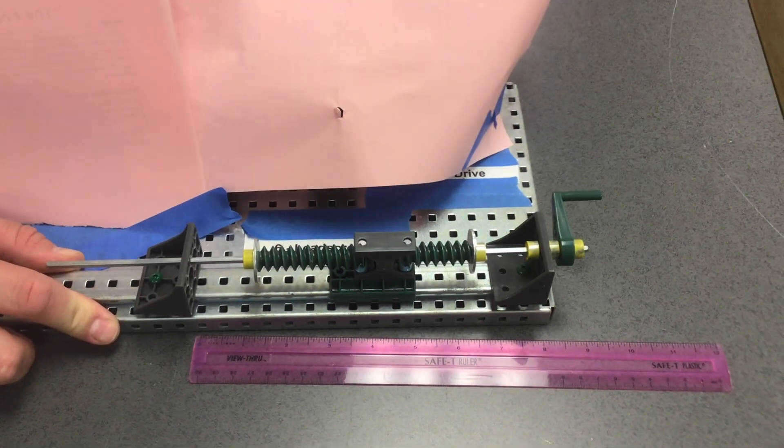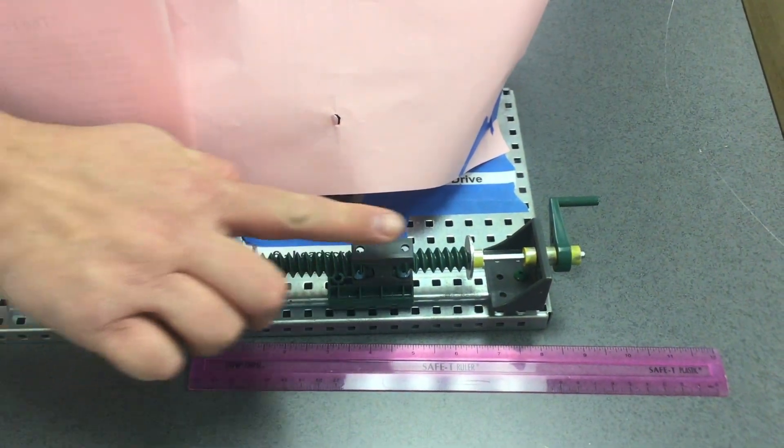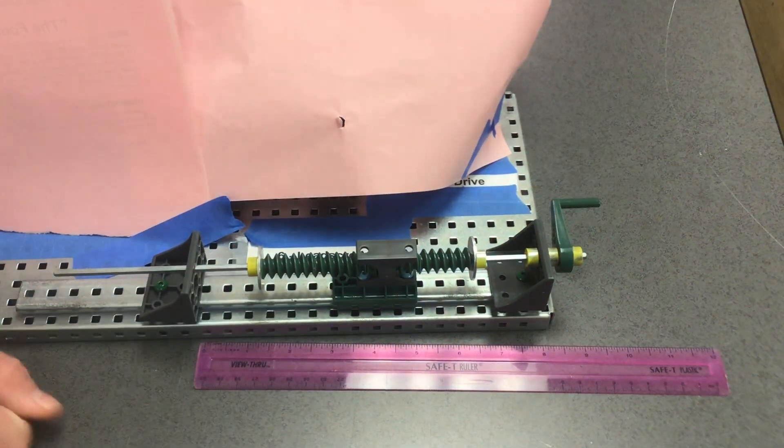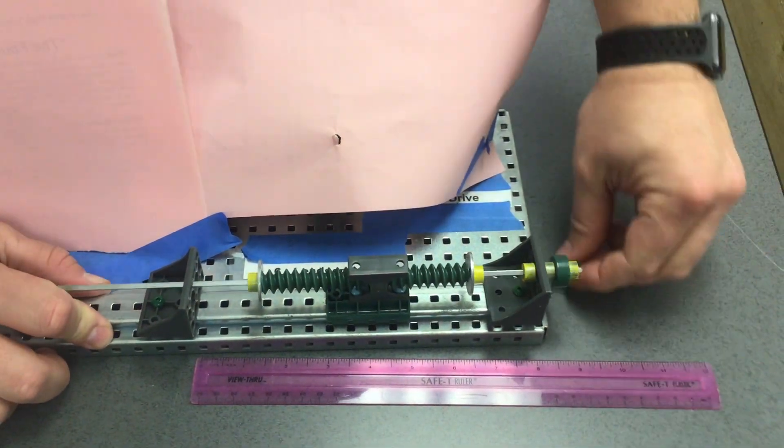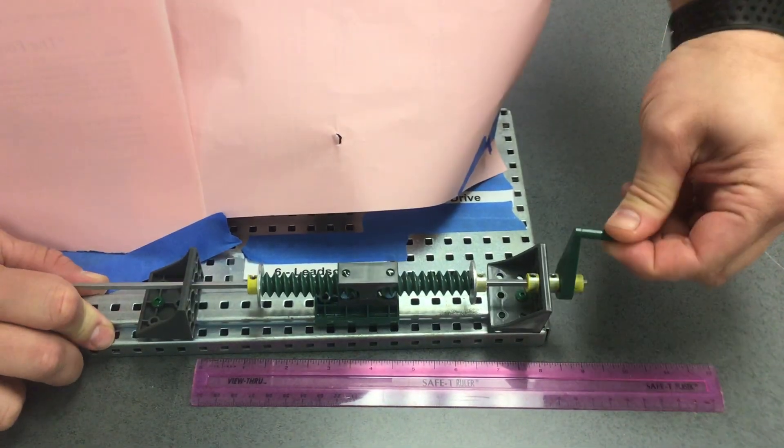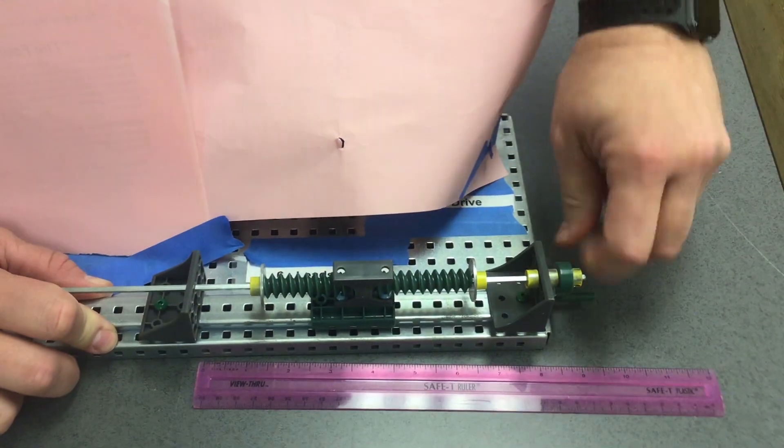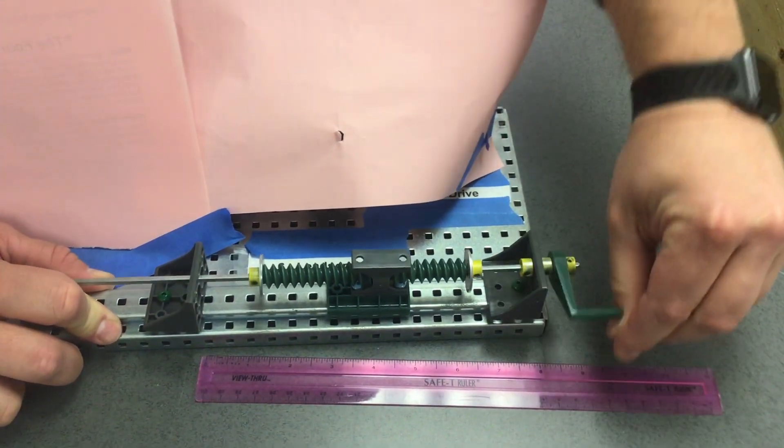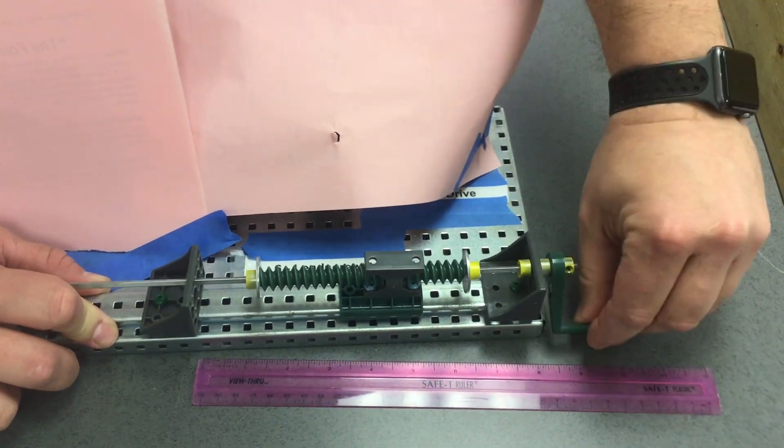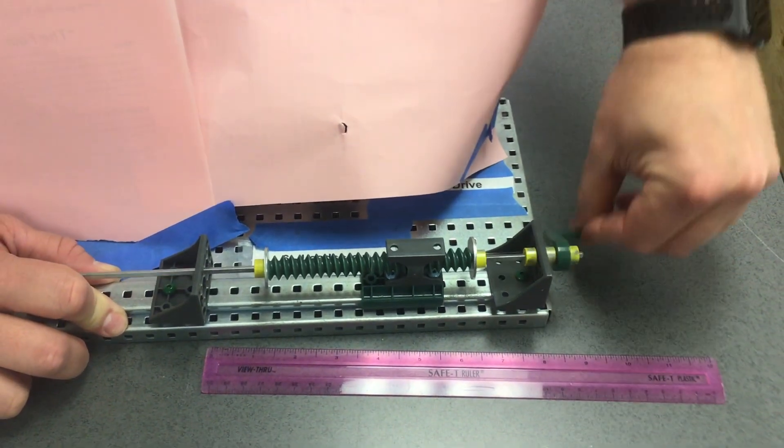The direction of travel, you'll notice, for this carriage moving in a linear fashion, is reversible. So you can change the direction of travel. It'll go this direction, and if I turn the crank the other way, it'll go the opposite direction.